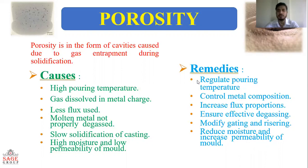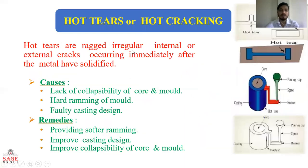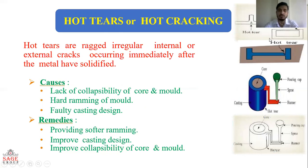The next defect is hot tear or hot cracking. Hot tears are irregular internal or external cracks occurring immediately after the metal has solidified, as shown in the diagram.